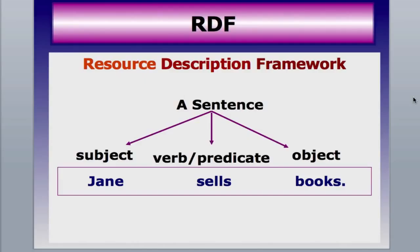How do you teach something like that to a computer? We're going to use an RDF, which is a Resource Description Framework. This is basically like a triplet — a very simple sentence: 'Jane sells books.' Jane is the subject, the verb or predicate is 'sells,' and the object is 'books.' So we have those three things.